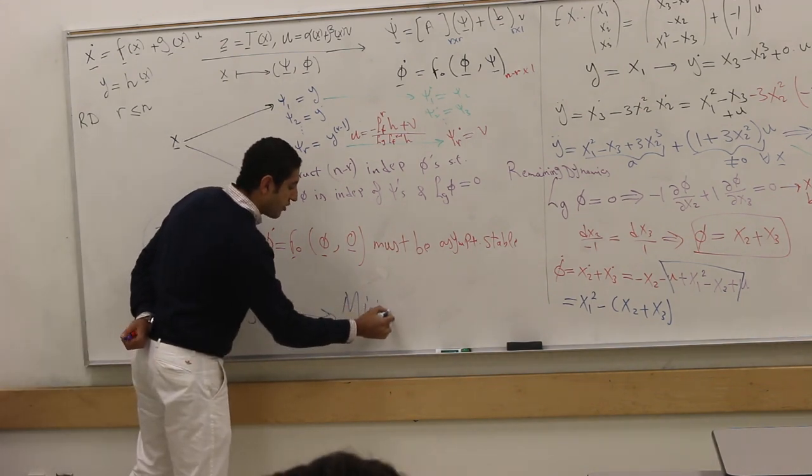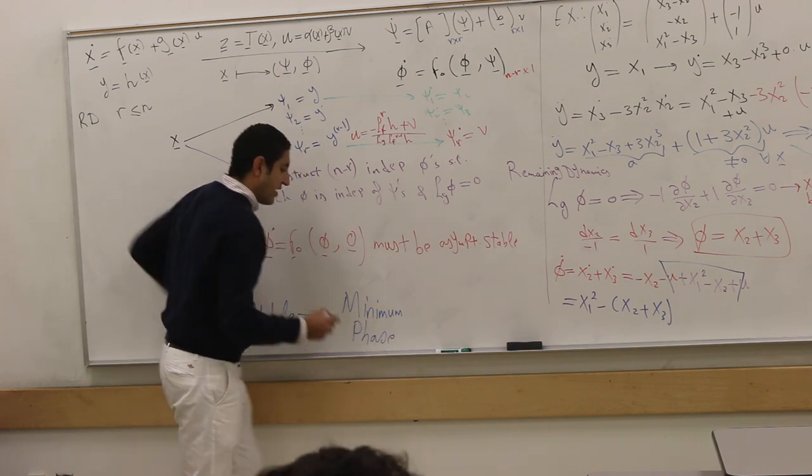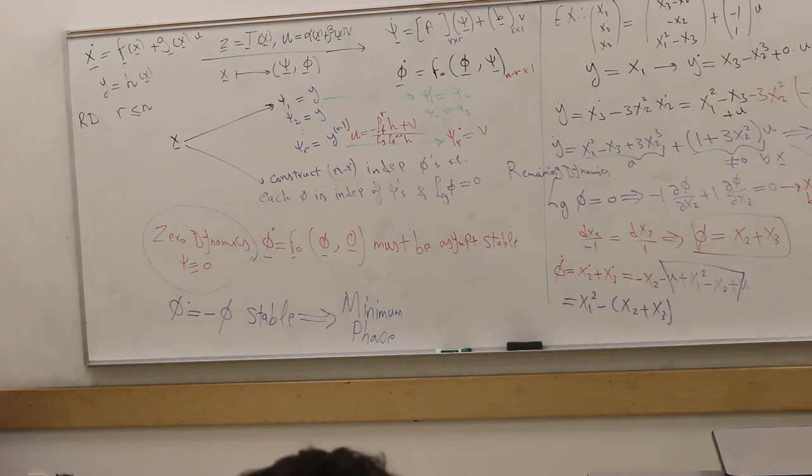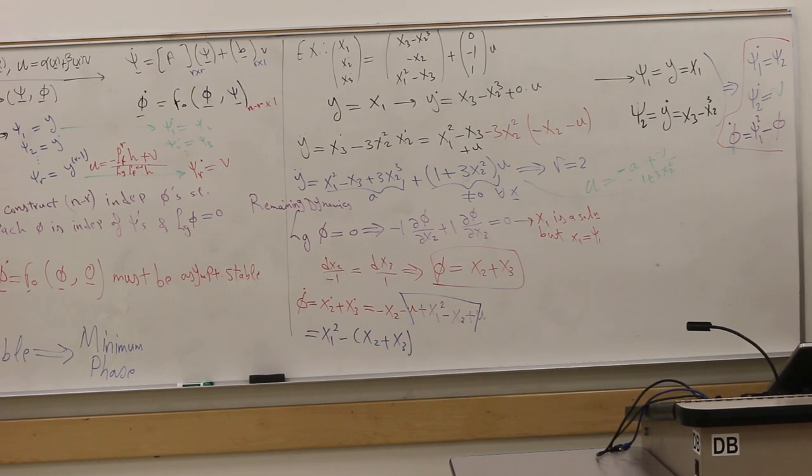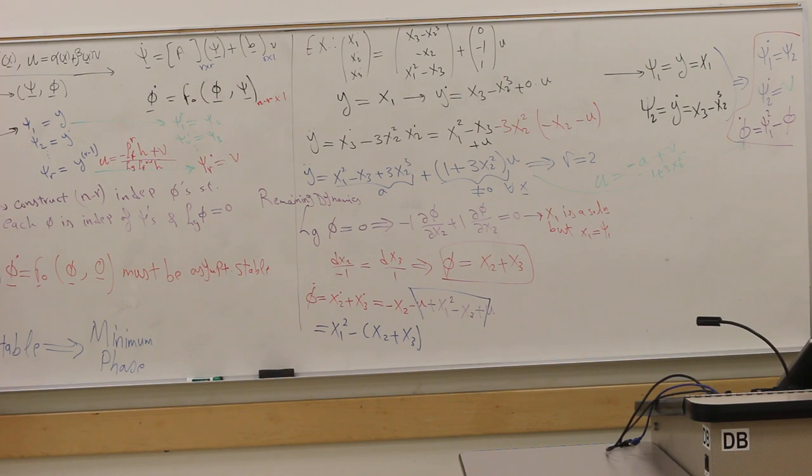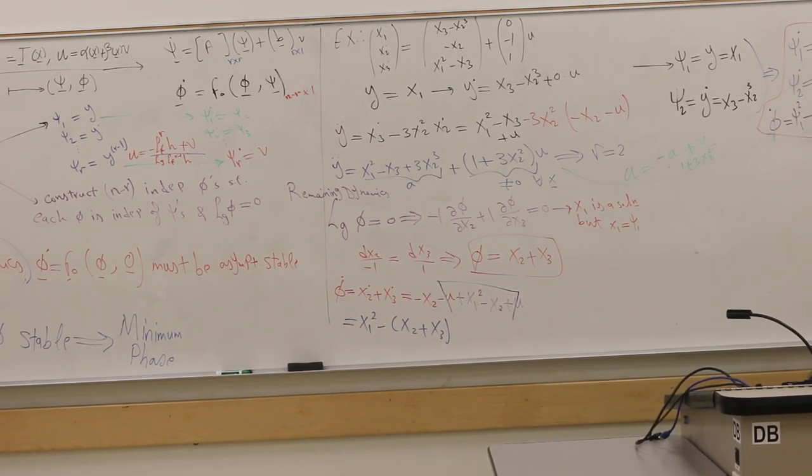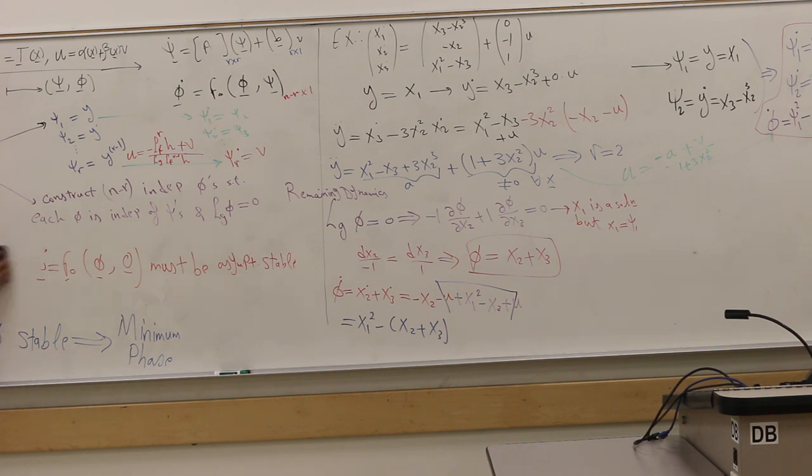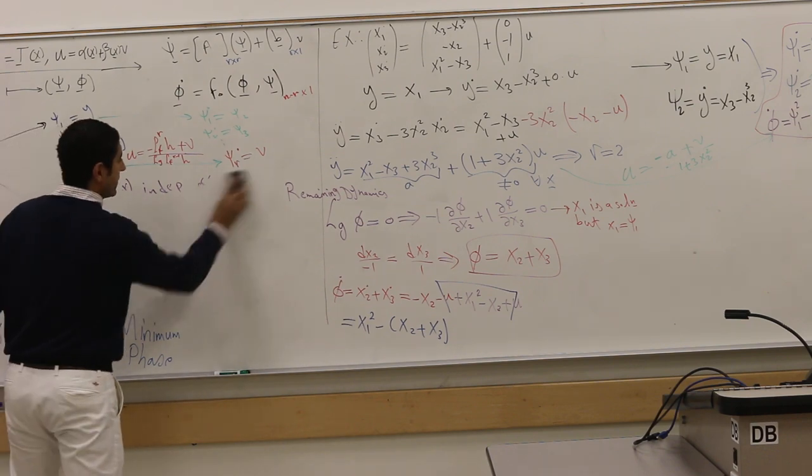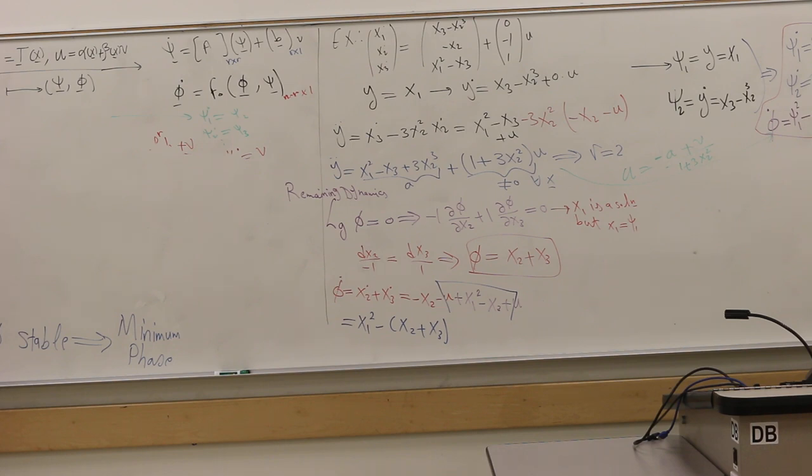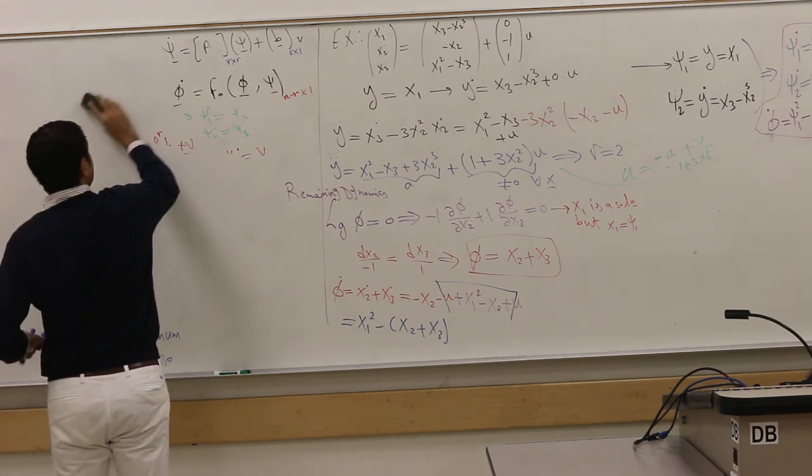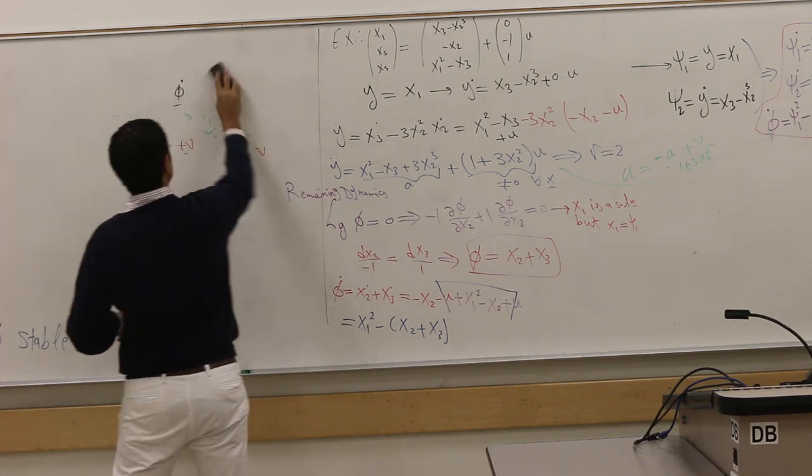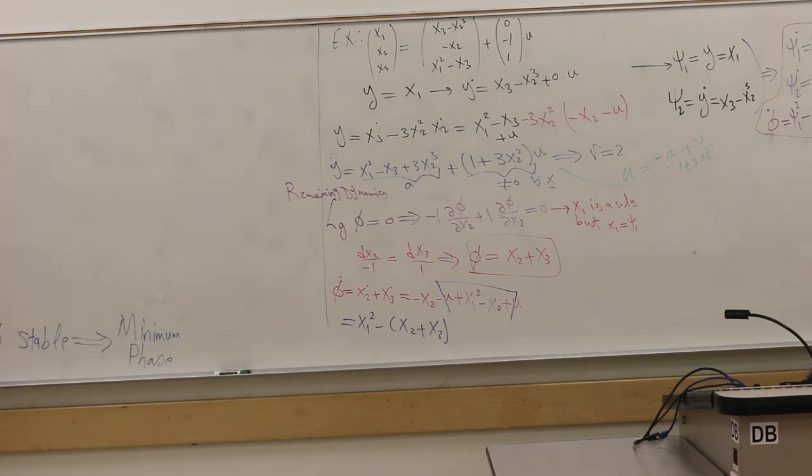Our system is minimum phase. You can go and design any control law V that drives ψ to zero, and we have a limit that ensures the entire system will go to zero nicely. This will not blow things up. Any question? This is the summary of how you apply the techniques that you learned in the last lecture. The interesting part to me was the connection with linear systems, the unobservability, pole-zero cancellation, and the minimum phase.